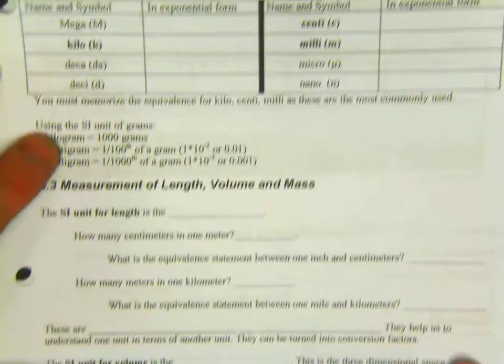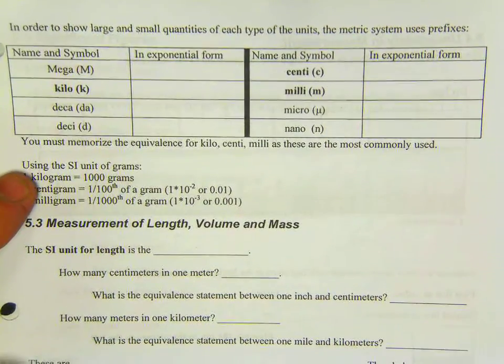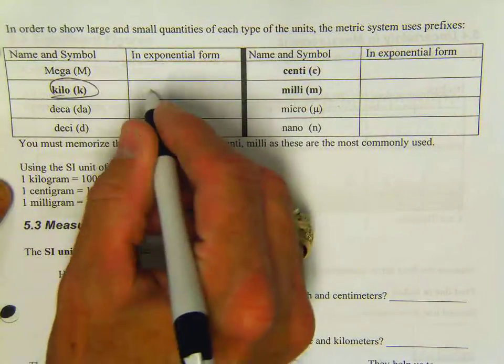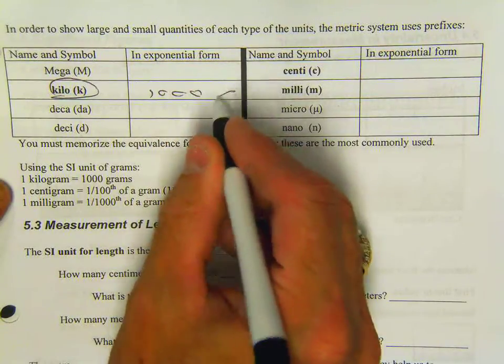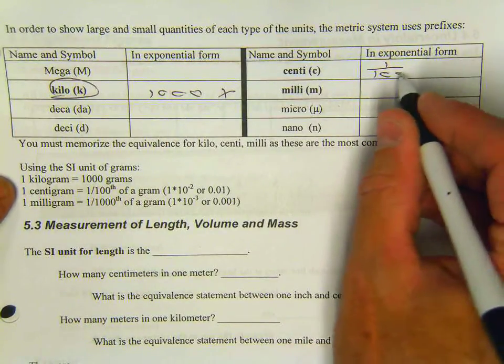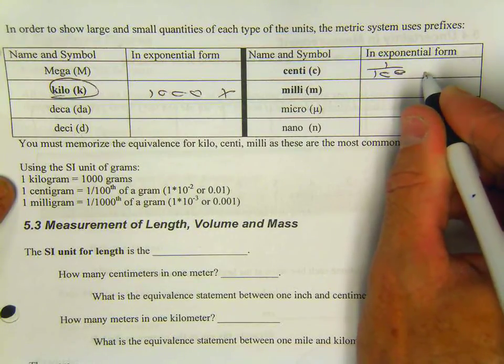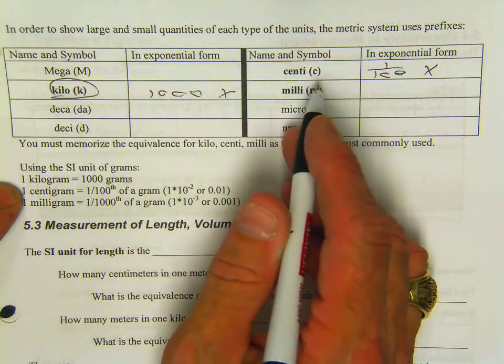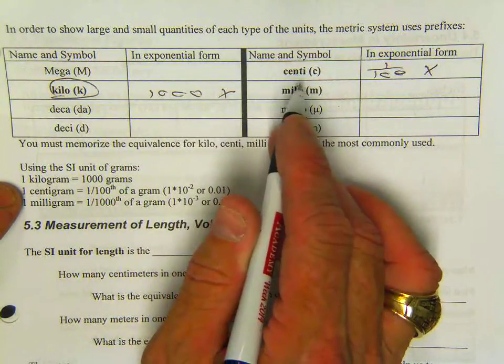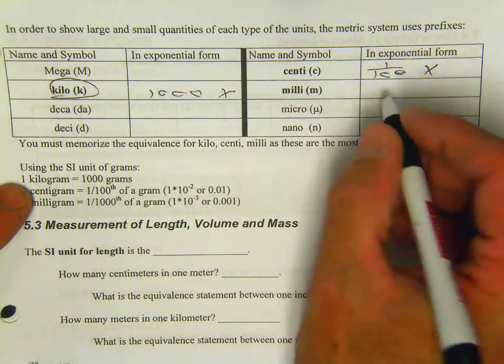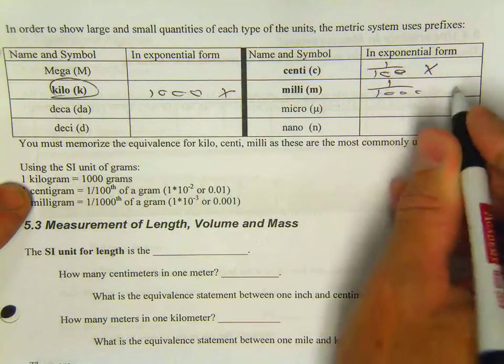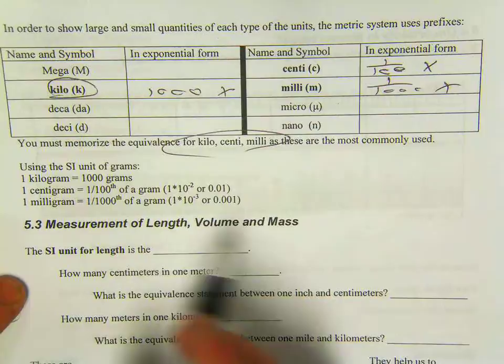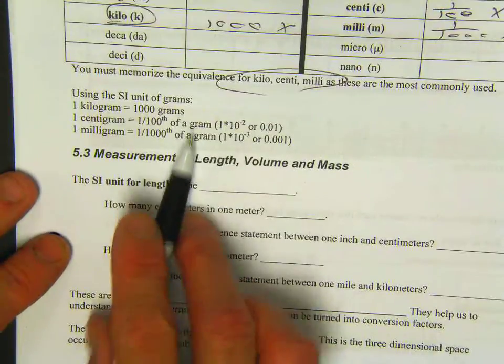Number 3. In order to show large and small quantities of each type, the metric system uses these prefixes. Notice I have highlighted the ones that I think are most important for you. Kilo is 1,000 times the basic unit. Centi is 1/100 of the basic unit, and milli is 1/1000 of the basic unit. You've got to memorize these three as the most commonly used. There are some examples for that, so make sure you go over that.